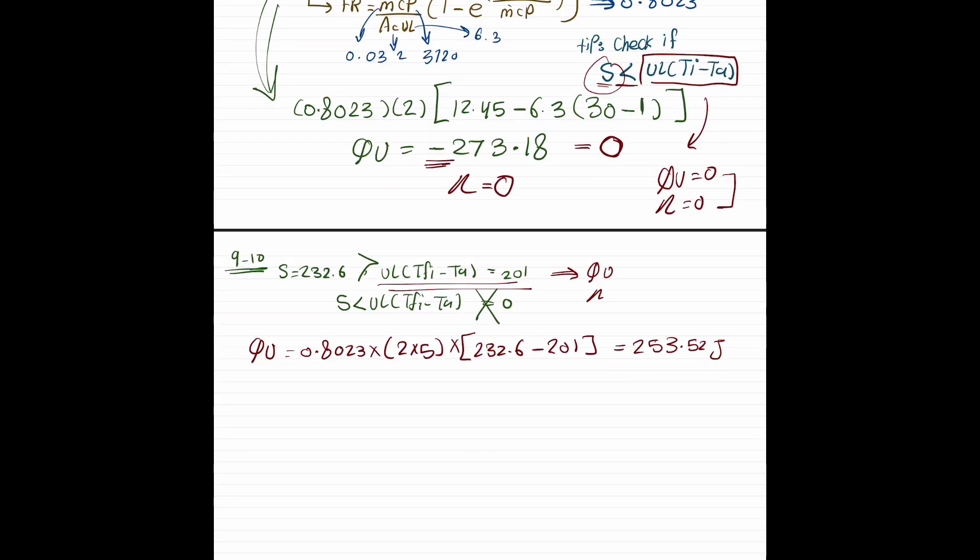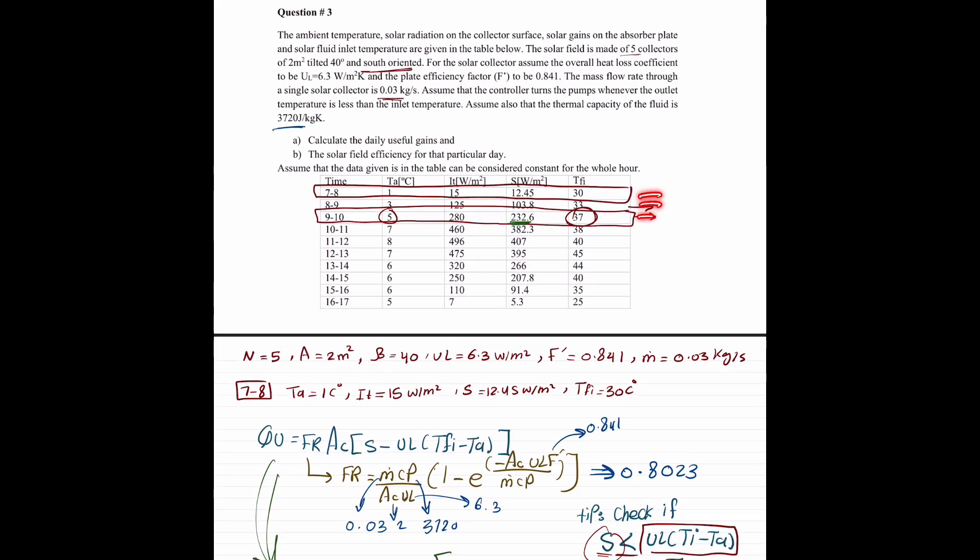And we got to do this for each row. Find the QU for each row. And then take the summation to find the first requirement. Calculate the daily useful gains. Actually, the daily, yeah. So, for this requirement, you have to find the QU for each row.